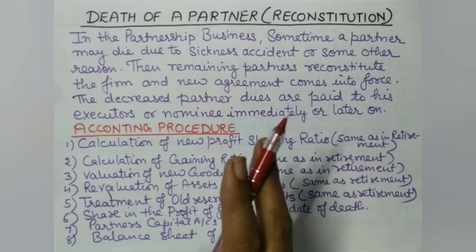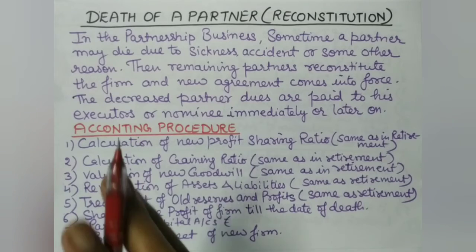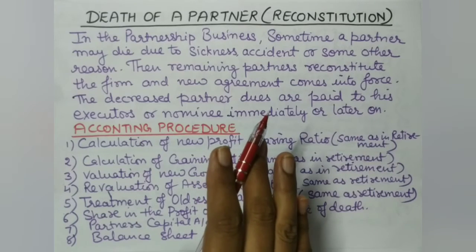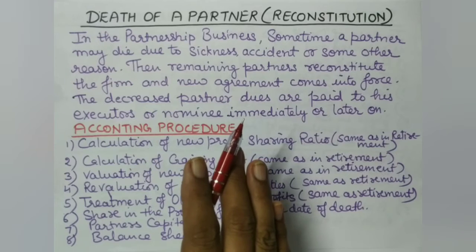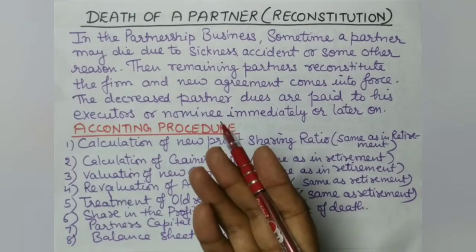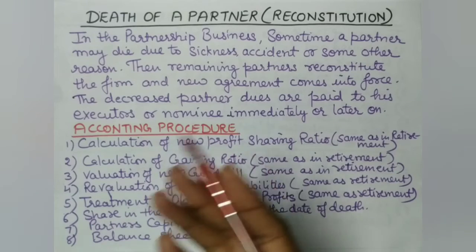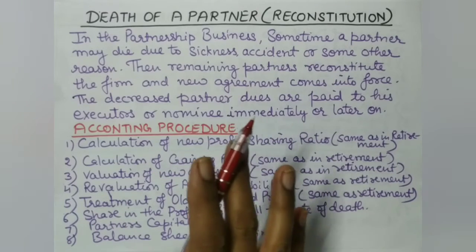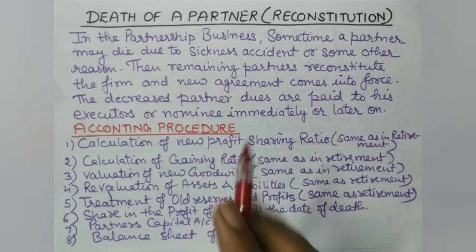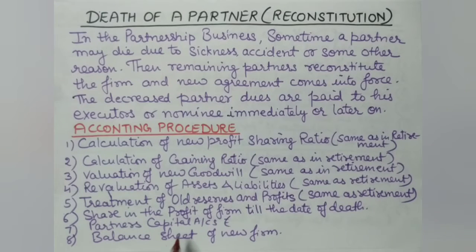This share in profit till the date of death is a new thing not found in retirement. In retirement, payment is made at the year-end. But here, because we are making payment to the executor immediately — since the partner is no longer alive and the nominee cannot wait until year-end — we make all payments and close all accounts at once. So we credit the deceased partner with his estimated share in profit till the date of death.